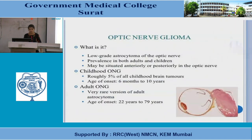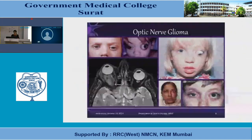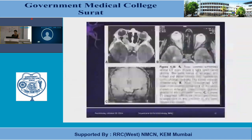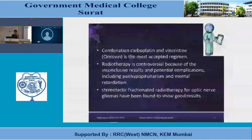Optic nerve glioma is an astrocytoma of the optic nerve, most commonly occurring in childhood — it is very rare in adults. The key memory point: meningioma is most common in adults around the sixth to eighth decade, while glioma mainly affects children.